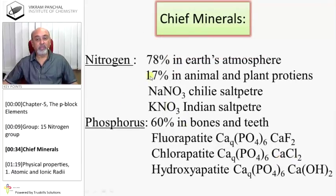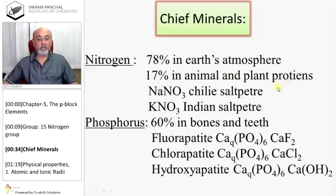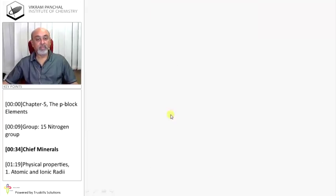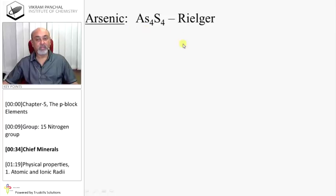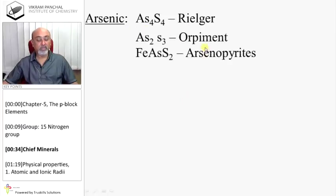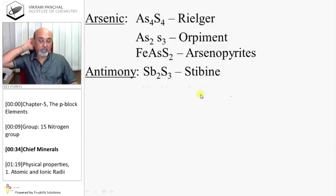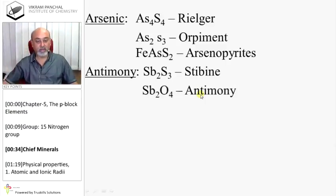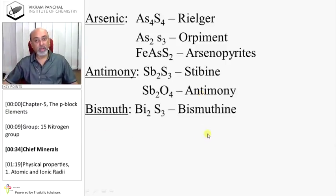Chief Minerals: Nitrogen, 78% in Earth's atmosphere, 17% in animal and plant proteins, Chile saltpeter, Indian saltpeter. Phosphorus, 60% in bones and teeth, fluorapatite, chlorapatite, hydroxyapatite. Arsenic: realgar, orpiment, and arsenopyrite. Antimony: stibnite. Bismuth: bismuthinite, bismite, and bismuth glance.